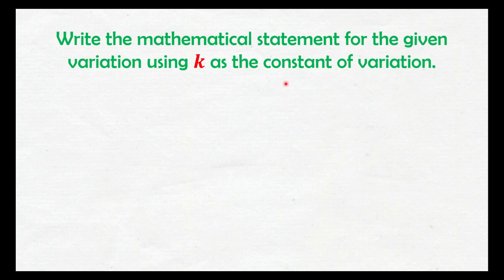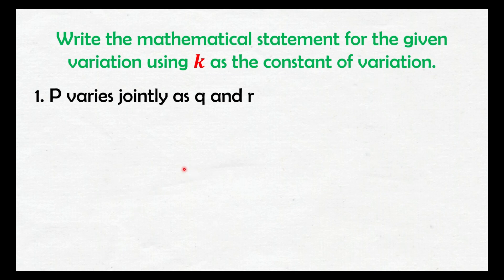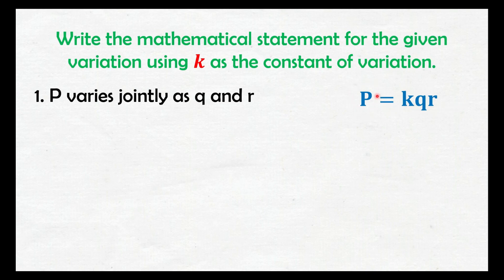Write the mathematical statement for the given variation using k as the constant of variation. Number one: p varies jointly as q and r. Paano natin susulat yung mathematical statement ito? Kagaya lang din sa direct variation — ito yung nabanggit na unang variable: p varies jointly, so ito yung nasa left side. Itong q and r, ito yung nasa right side, nakasama yung constant. So, magiging P equals kqr. Unang nabanggit na variable is p, tapos yung qr nasa right side, kasama yung constant — minimum multiply lang yan.